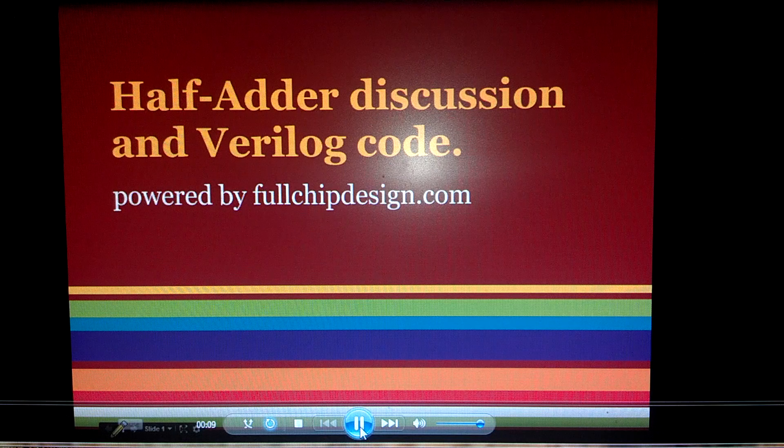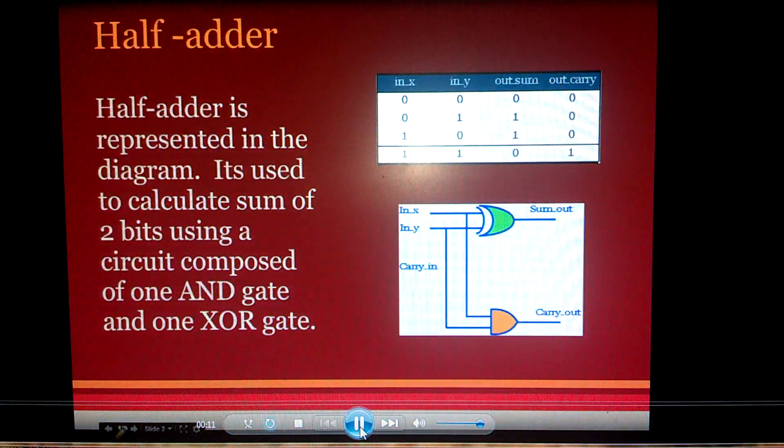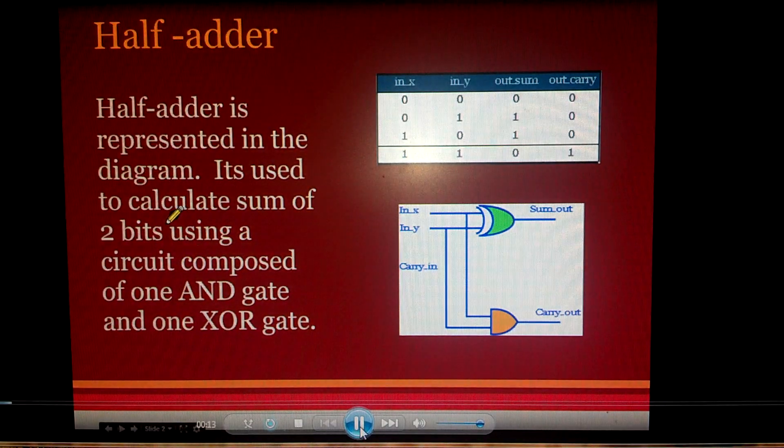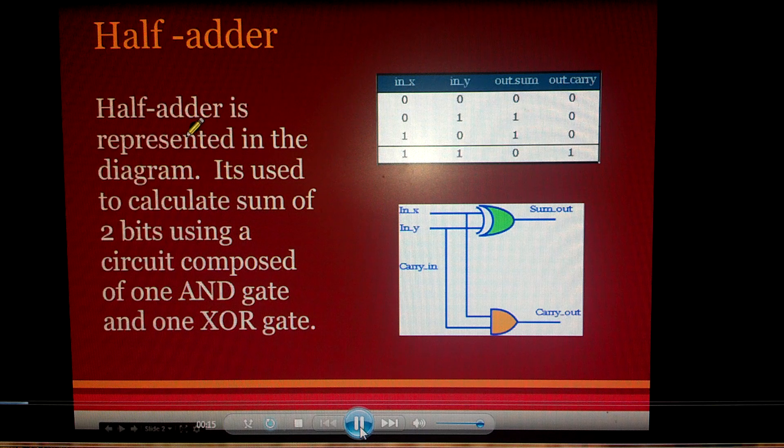Basically, a half-adder is used to add two bits. In our example, the two bits are x and y.